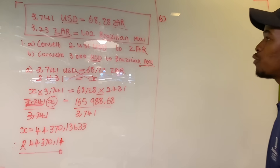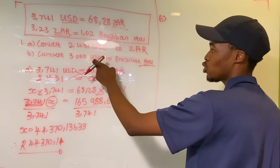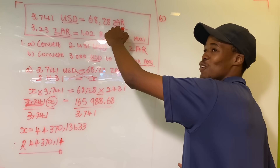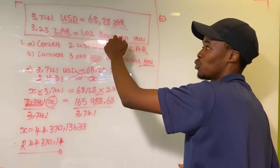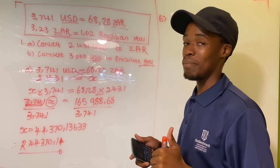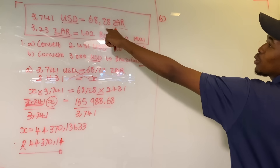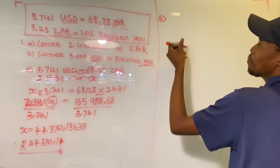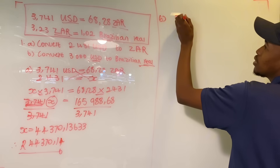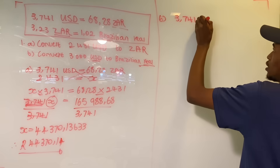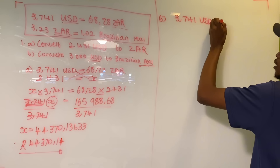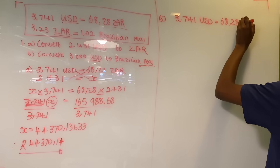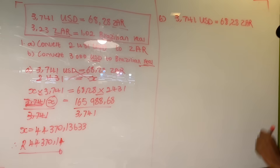So for part B, we're converting 3000 US dollars to Brazilian real, but we're going to start by converting to rands first, then take it from rands to Brazilian real. We're still going to use the information provided: 3.741 USD equals 68.28 South African rands.